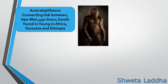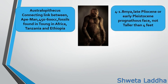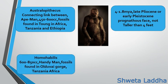Then came Australopithecus, considered the connecting link between ape and man. Their cranial capacity lies somewhere between 450 to 600 cc. Fossils were found in Africa — Tanzania and Ethiopia. They were present 4 to 1.8 million years ago in the late Pliocene or early Pleistocene. They had a prognathous face and were not taller than 4 feet.